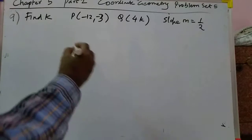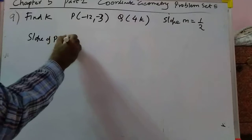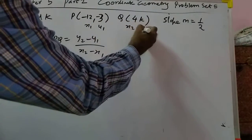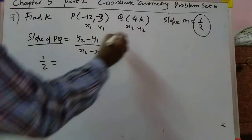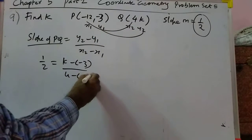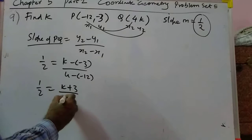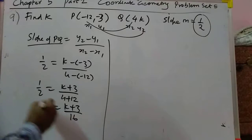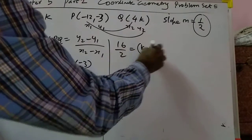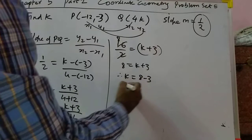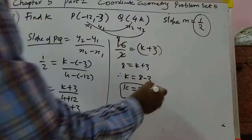Next, problem 9. You know the slope formula: slope of PQ equals (y2 minus y1) over (x2 minus x1). Take (x1, y1) and (x2, y2). Slope is given as 1/2, so 1/2 equals (k minus half minus 3) over (4 minus half minus 12), which gives (k plus 3) over 16. So 16 over 2 equals k plus 3, that is 8 equals k plus 3, therefore k equals 5.